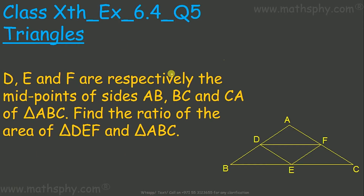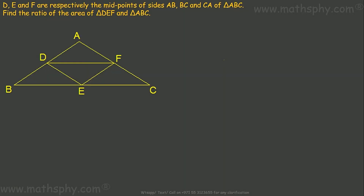This question says D, E, and F are midpoints of the sides of triangle ABC. D is the midpoint of side AB, E is the midpoint of BC, and F is the midpoint of AC. Find the ratio of the area of triangle DEF to the area of triangle ABC.